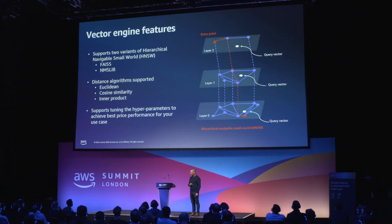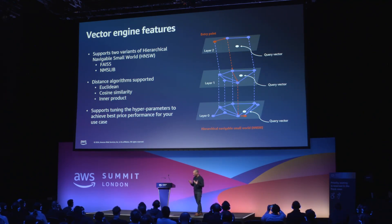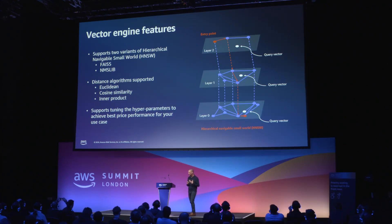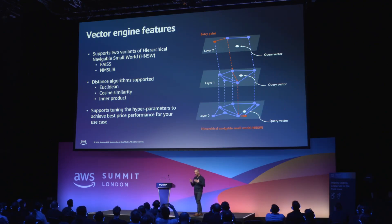When you think about Vector Engine features, you need to think about the underlying algorithms that support them. The Vector Engine supports what's called HNSW — a state-of-the-art algorithm used for approximate nearest neighbour search. It supports two popular implementations, including nmslib. But it also supports different distance algorithms, because what you're trying to do is align your algorithm to the data.